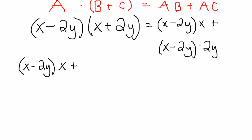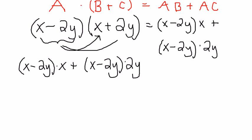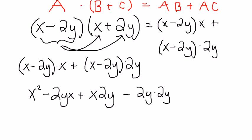And I'm distributing it to the x and the 2y. So, this whole thing gets distributed here and here. Then what happens? x times x is x² - 2yx + x(2y) - 2y times 2y.